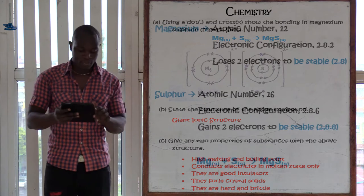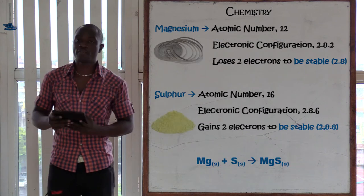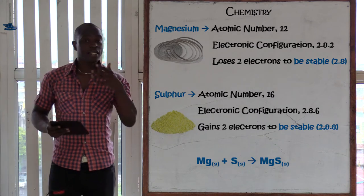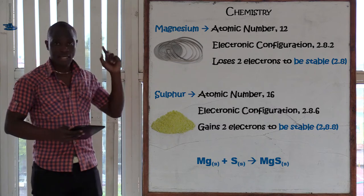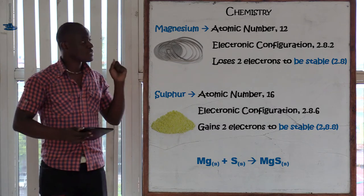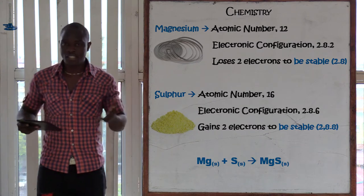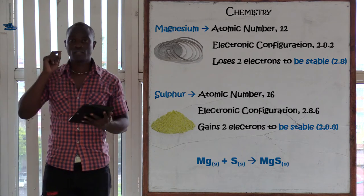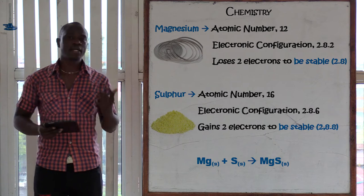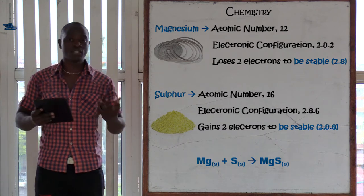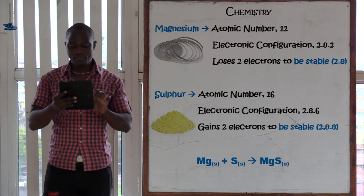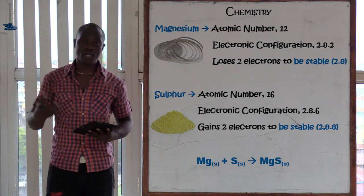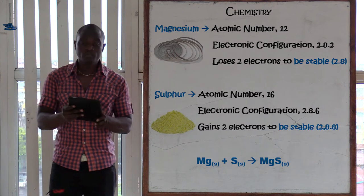Magnesium is a metal with atomic number 12 and electronic configuration 2, 8, 2. Sulfur is a non-metal with atomic number 16 and electronic configuration 2, 8, 6. Since magnesium loses two electrons to be stable and sulfur gains two electrons to be stable, this is a metal reacting with a non-metal, which forms an ionic bond.